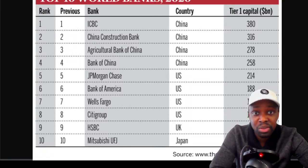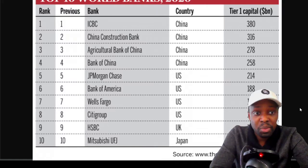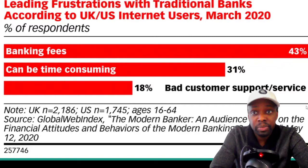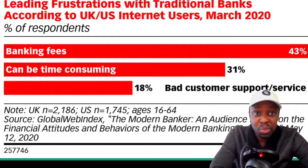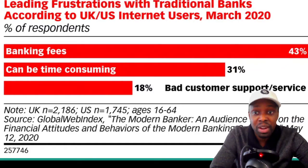The top 10 banks list has the first four in China, then JPMorgan Chase, Bank of America, Wells Fargo, Citigroup, HSBC, and Mitsubishi. Now, what's the issue with banking right now? According to internet users from the UK and the US, 43% said banking fees are the number one frustration. Number two, it can be time consuming — you have to wait in line or call, and wait times can be two to three hours. And then bad customer service — banks are cutting staff, reducing call center hours, and you're just getting bottlenecked. Number one is people are being fee'd to death, while bank net profits break records every year.